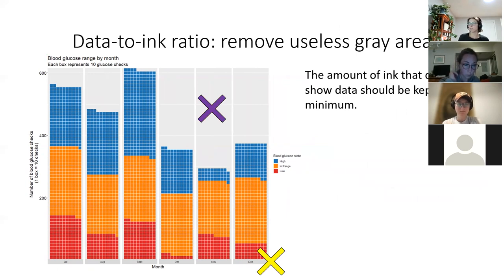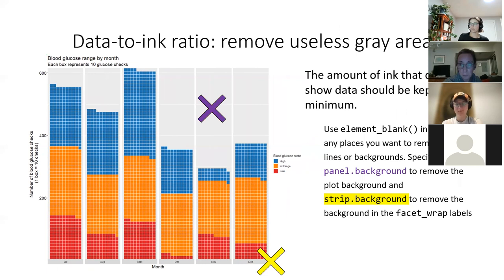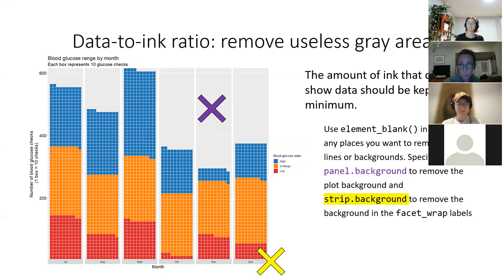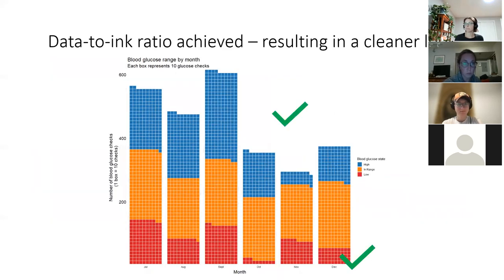Next step is data-to-ink ratio. In R, they really like to give us this useless gray area — it's not helpful, it doesn't mean anything. Human factors would say that the amount of ink that doesn't show data should be kept to a minimum. So we should get rid of that. You can put element_blank() in your theme for any places you want to remove black lines or backgrounds — for example, panel.background takes out the background, and strip.background removes the facet wrap labels. Now we have taken out the gray and have a much cleaner look. Honestly, this is starting to look like Tableau, which uses a lot of human factors principles to base their templates.